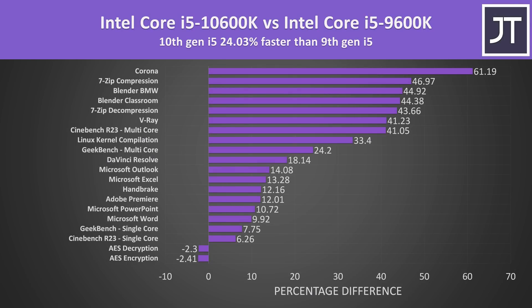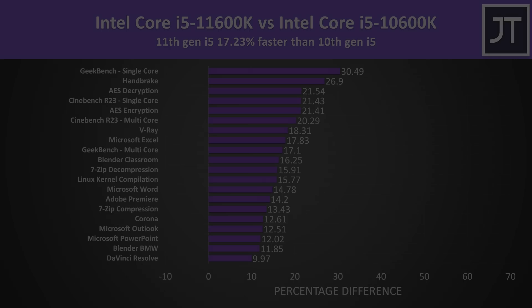There's a much bigger difference comparing 10th gen against 9th gen, where the 10600K was 24% ahead of the 9600K. This is because 10th gen enabled hyperthreading, resulting in big boosts to multithreaded workloads, while single threaded gains were much lower.